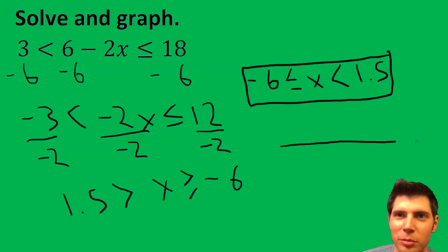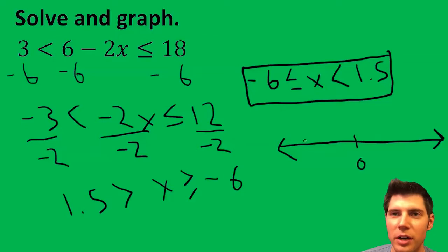And then to graph it, you can do a number line. I usually just show a couple key values: 0, -6, and 1.5.